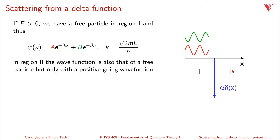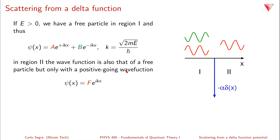In region two, on the right side where x is greater than zero, the wave function is also that of a free particle, but only with a positive-going wave. Since we assume the wave is traveling from the left — from negative infinity toward the barrier — there can be no waves traveling from positive infinity inward. So we ignore the leftward wave function on the x > 0 range, and write psi(x) = F·e^(ikx), traveling in the positive direction.